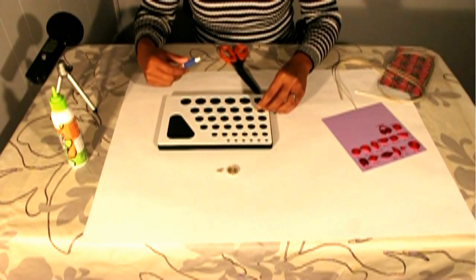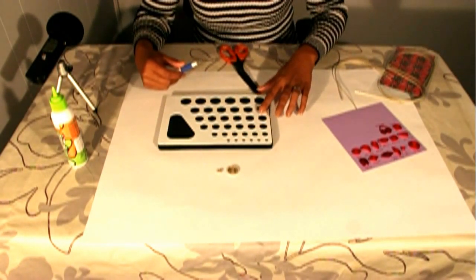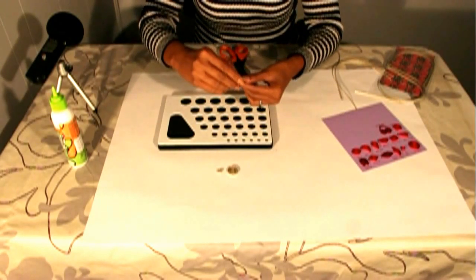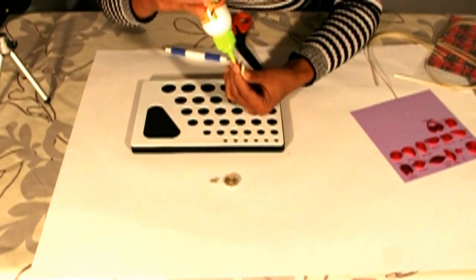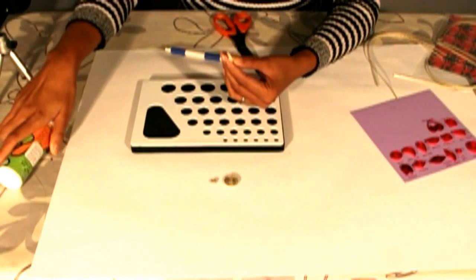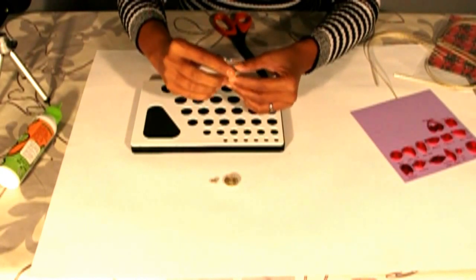And put it in the size hole of the quilling board. Get it from the quilling board and put some glue on it again. And close.